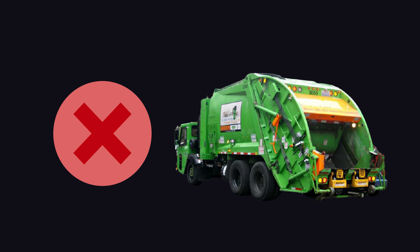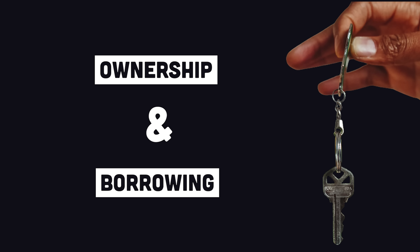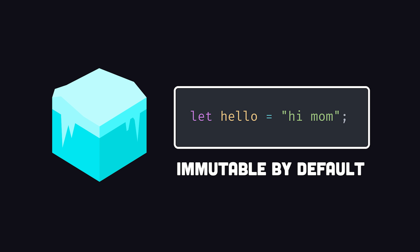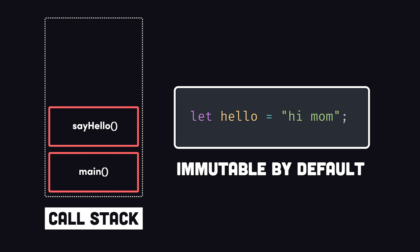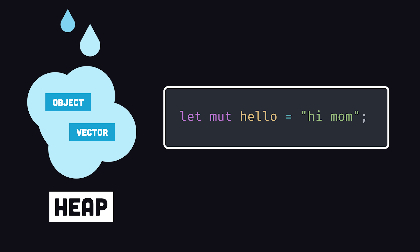Rust has no garbage collector, but achieves memory safety with a concept known as ownership and borrowing. By default, every variable in Rust is immutable. This allows values to be used in the stack memory, which has minimal performance overhead. However, mutable values, or objects with an unknown size at compile time, are stored in the heap memory.